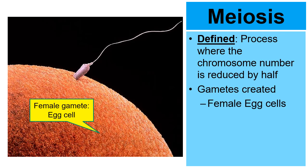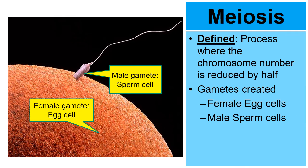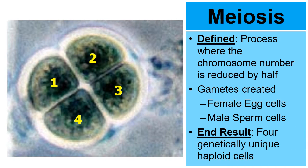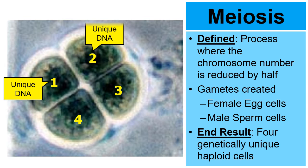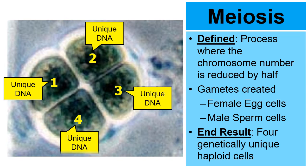In the picture, the orange thing that kind of looks like a basketball is the female gamete — an egg cell. The other one that looks like a tadpole is the male gamete, the sperm cell. Meiosis makes the sperm and egg cells. The end result of meiosis will be four cells — four haploid cells, each of them genetically unique.